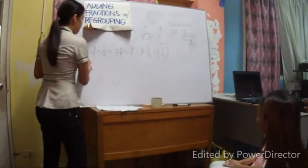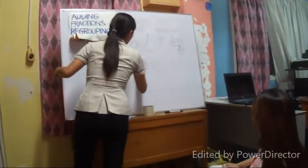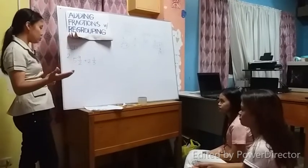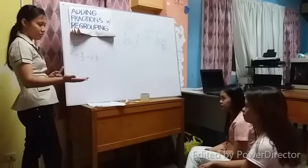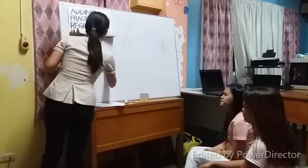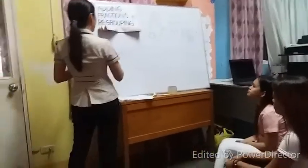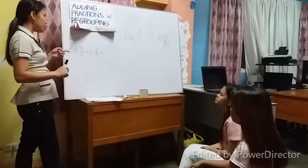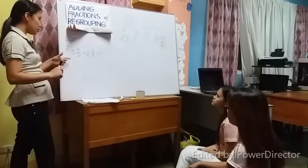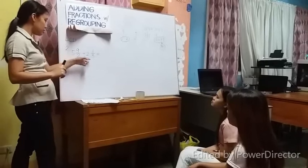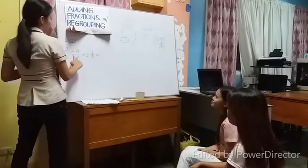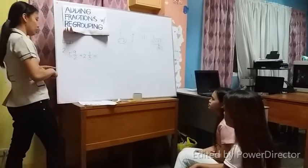Any questions so far? If there are none, we'll proceed with another example. The next problem: we find the LCD first, then identify whether this problem needs regrouping or not. We look at the denominators. Does it need regrouping? Yes, it needs regrouping because it has different denominators. So we find first the LCD of 2 and 3.